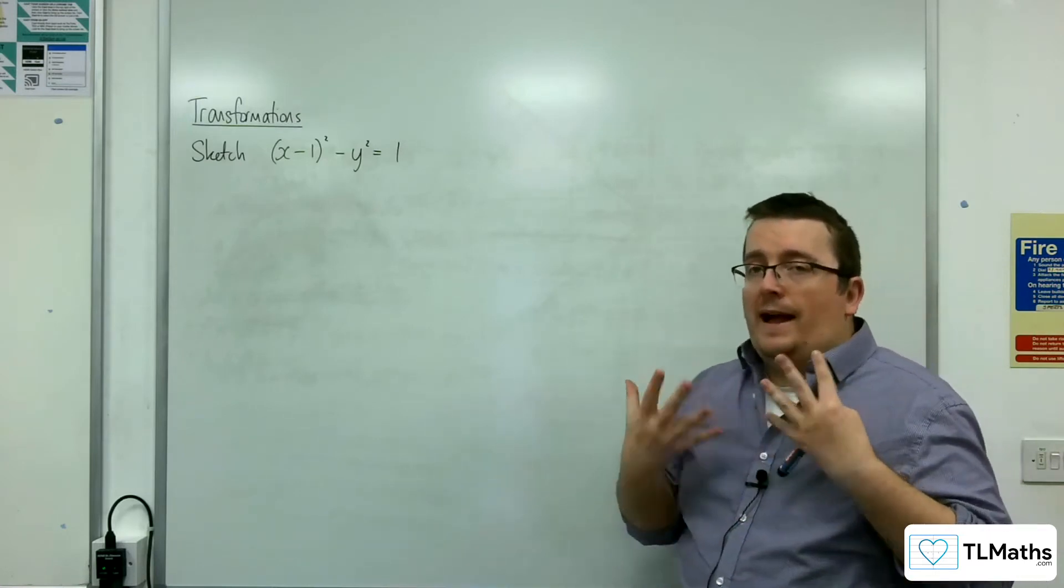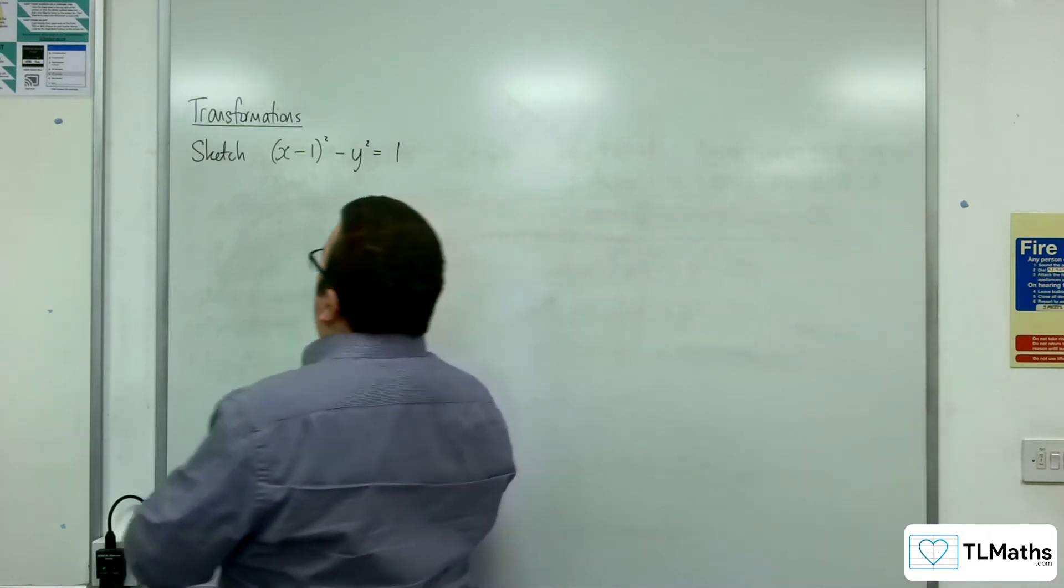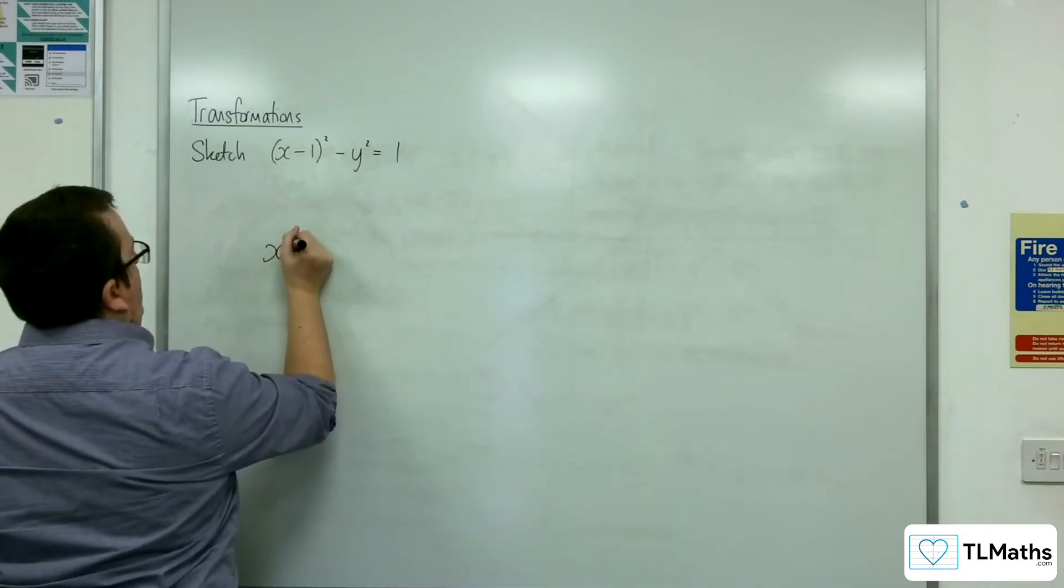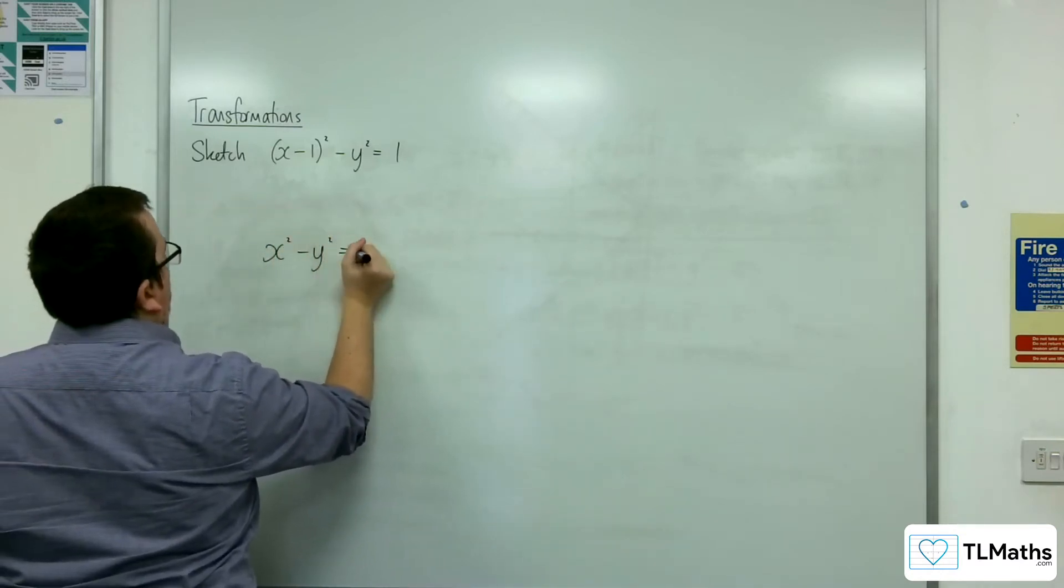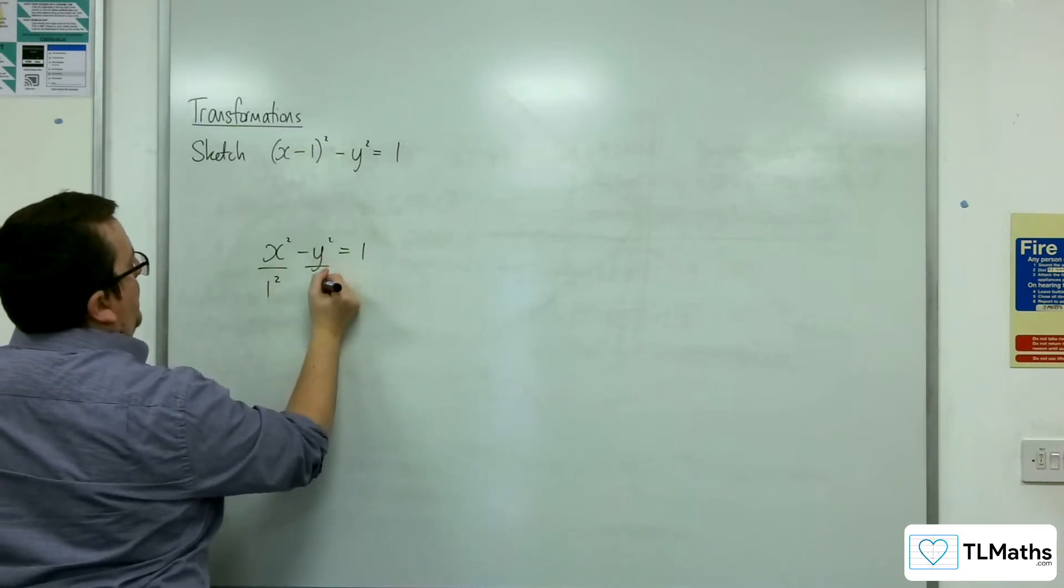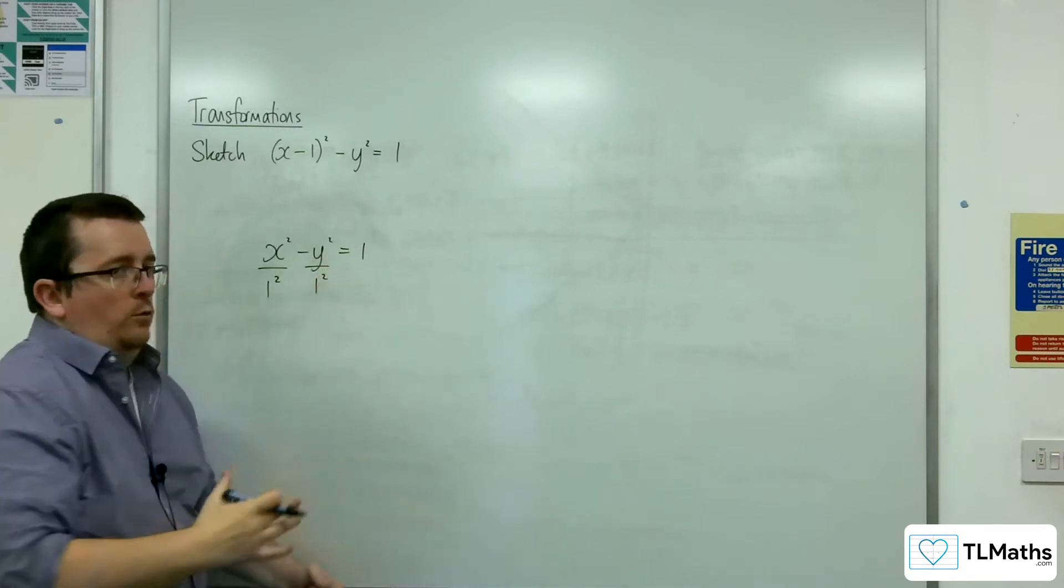So imagine if that hadn't happened, that the original graph was x squared take away y squared equals 1, which you can write as x squared over 1 squared take away y squared over 1 squared equals 1.